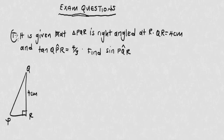The first question says: it is given that triangle PQR is right-angled at R. QR is 4 centimeters, and tan QPR is equal to 4 over 3. Find sin PQR.